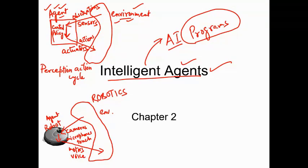The second thing is that agents — AI agents — sense the environment using sensors. Every agent has sensors to sense the different states of the environment. They need sensors to sense it about the environment.